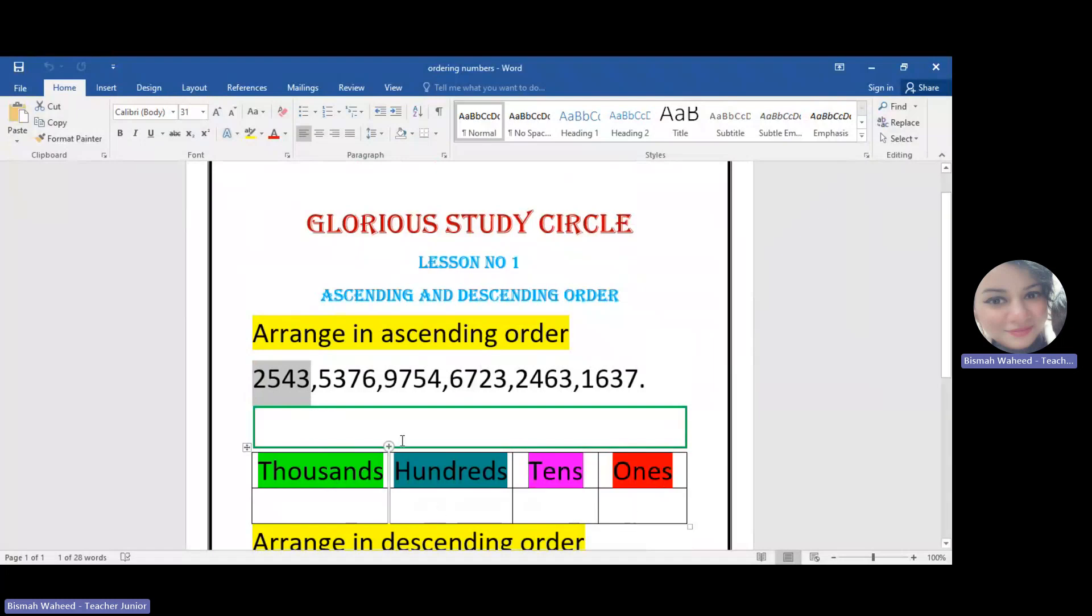Let's write this number according to their place value. The right most number should be in one's column. So three is in ones, then the second number four is in tens, five is in hundreds, and then two is in thousands. So when we will read this number, we will say that it is 2543.